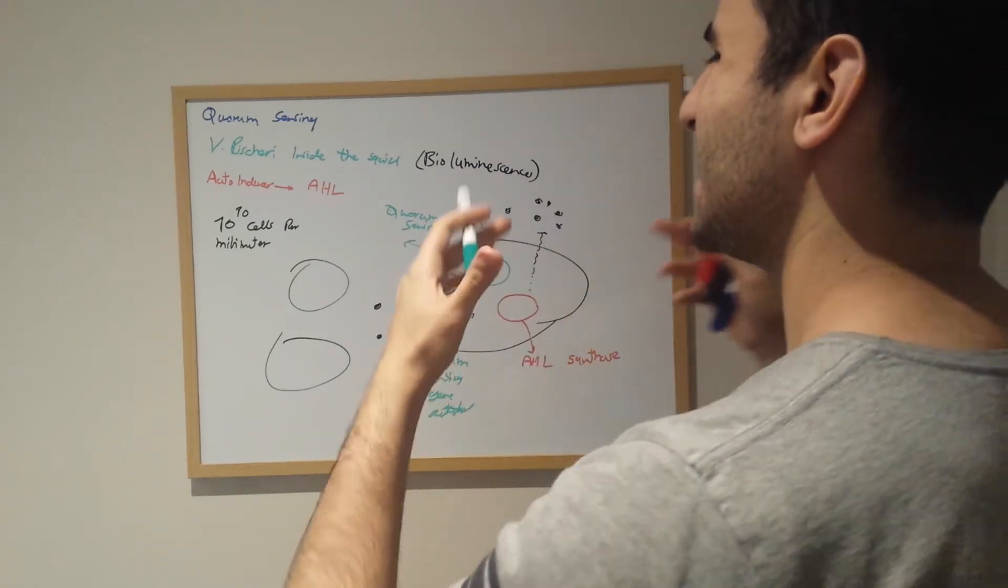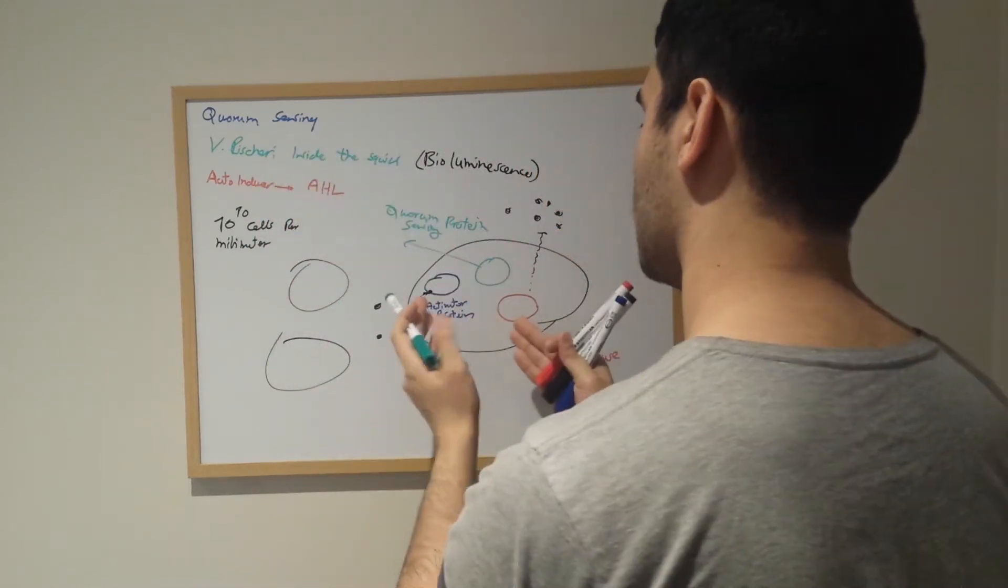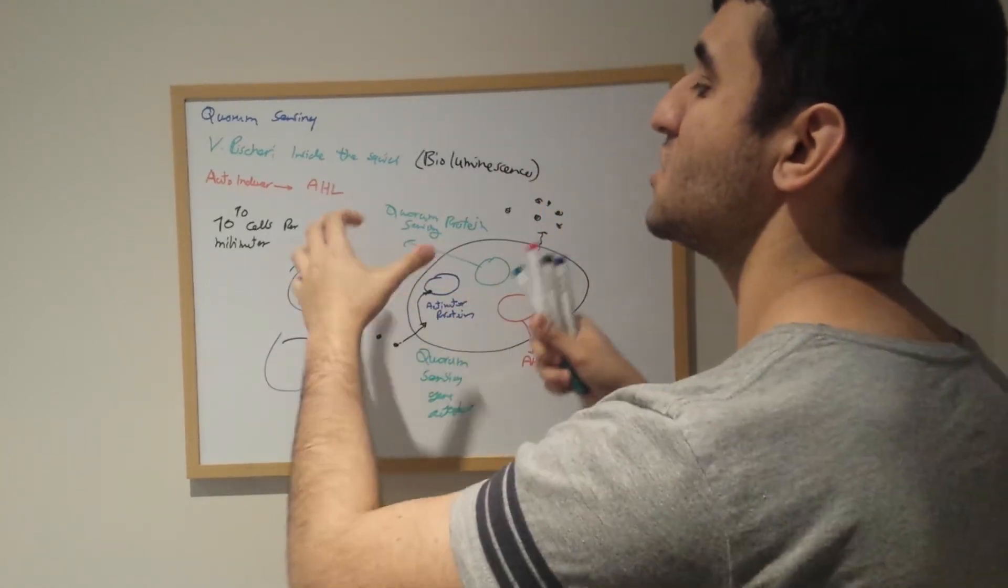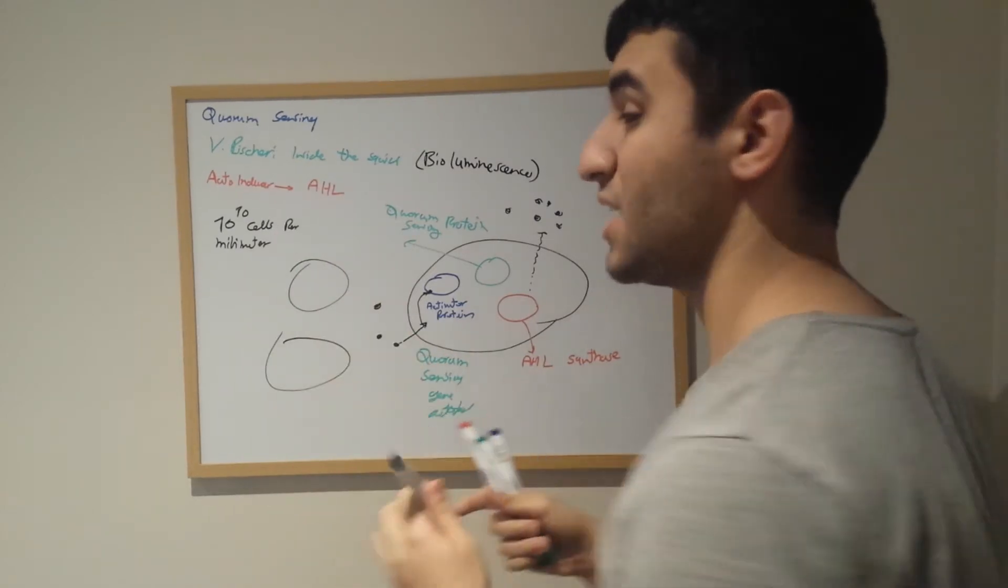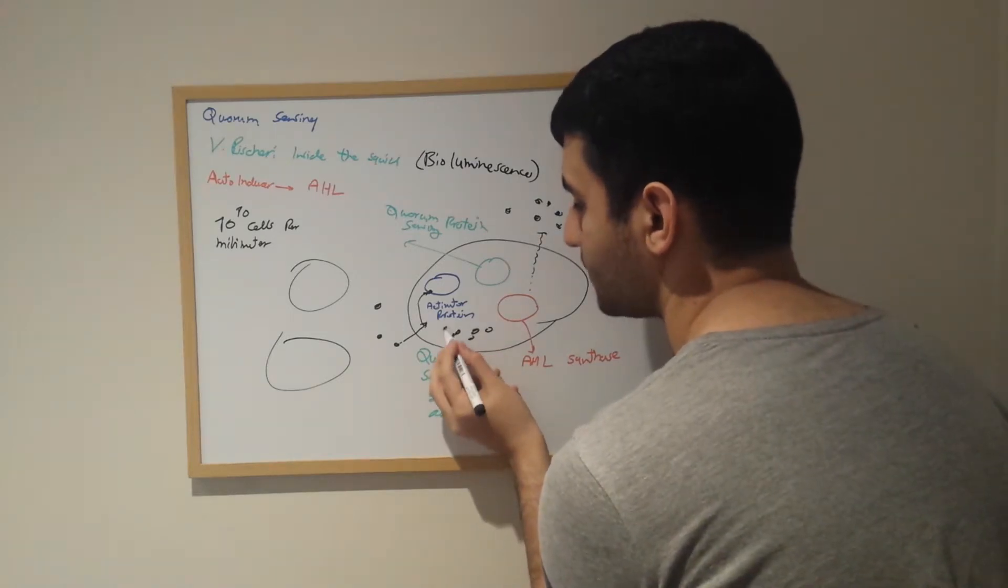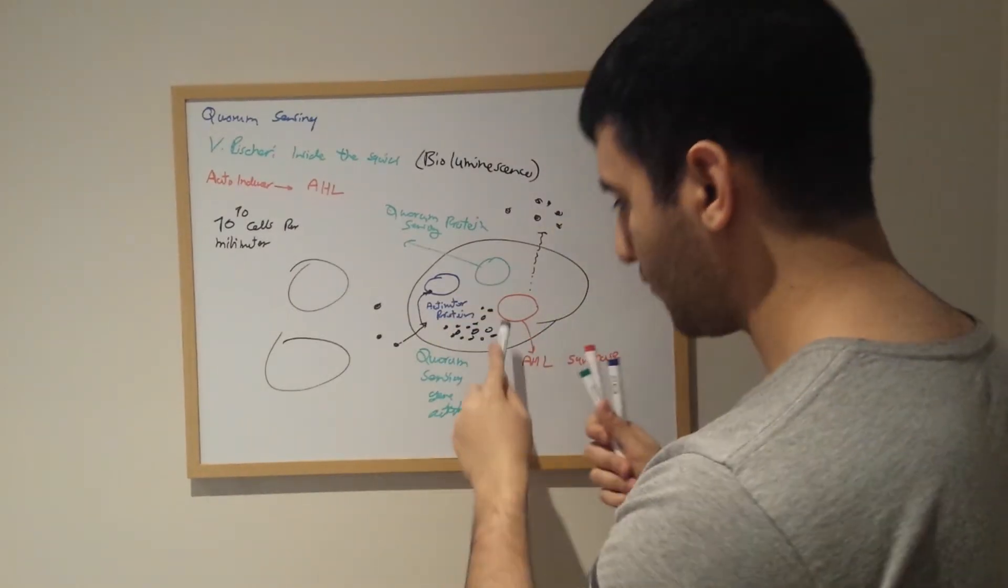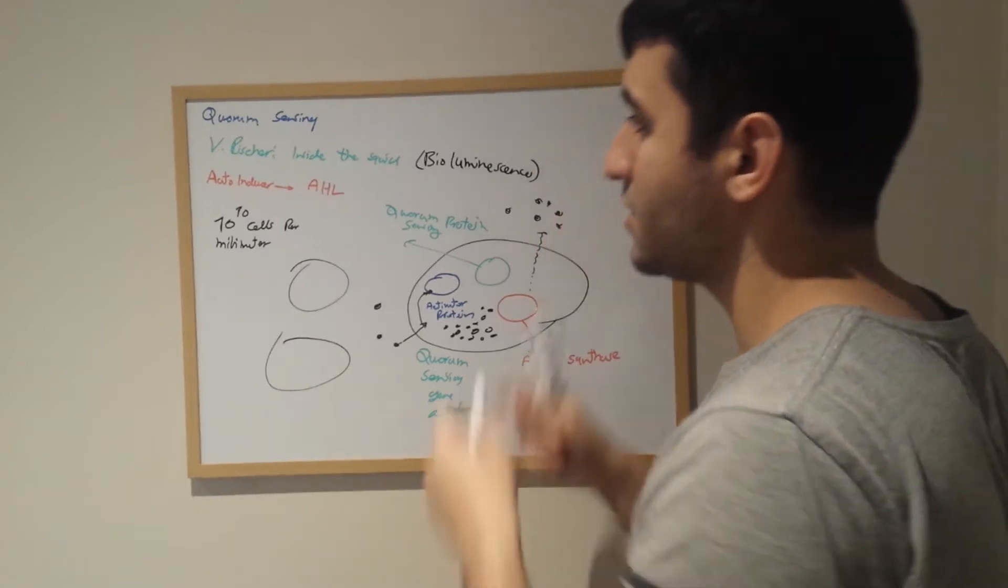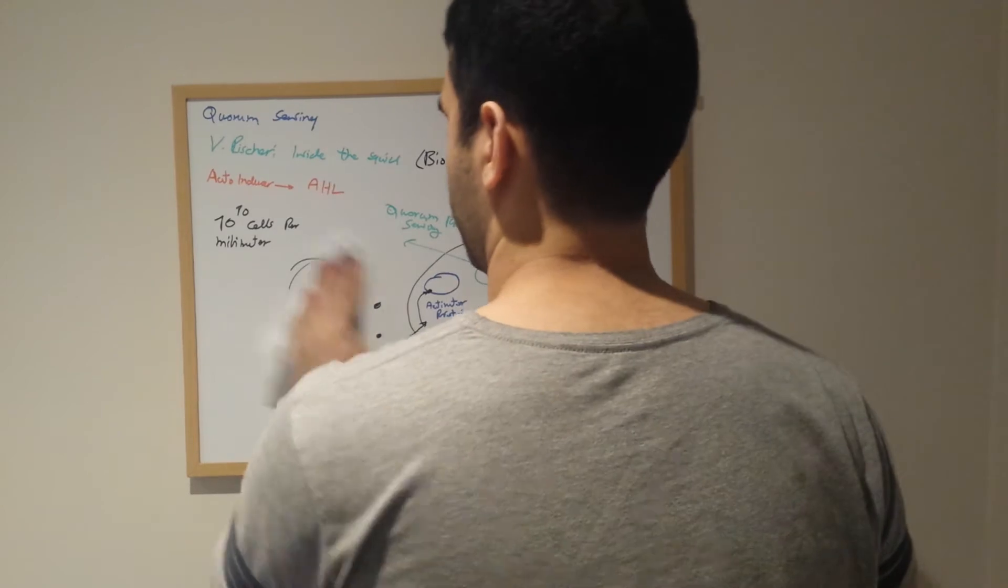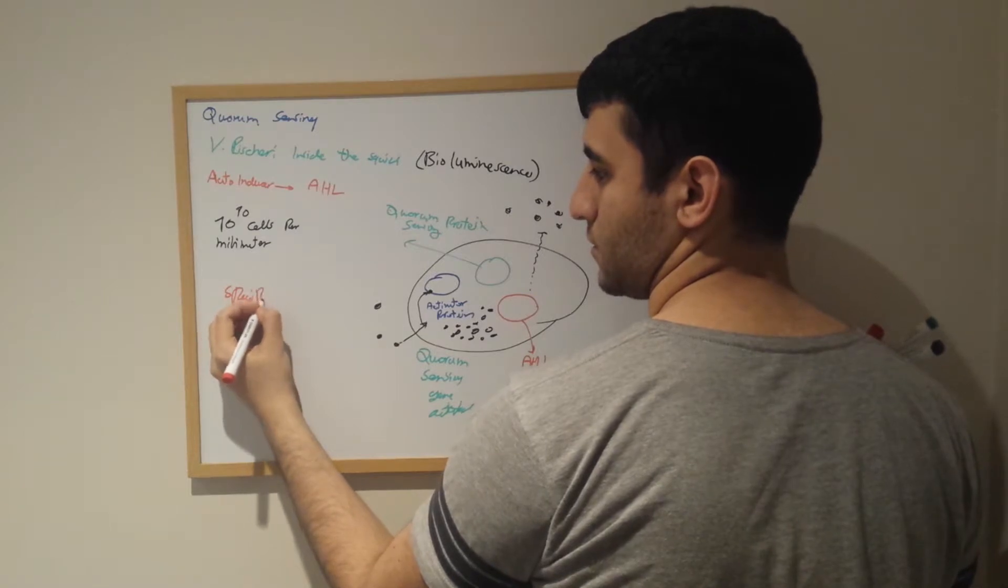Now, because of reaching the population threshold, the AHL number increases inside the cell. Remember, even though for reaching the full bioluminescence we need to have enough soldiers in the front line, we need to have enough AHL inside the cell. We need to have a specific amount of AHL inside the cell so that the bioluminescence would fully glow.